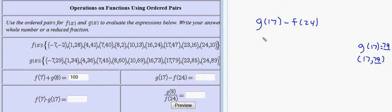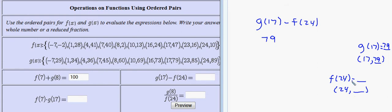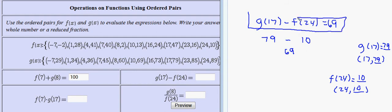I go up and replace g of 17 with 79. Now I'm supposed to subtract whatever I get when I do f of 24. As a point, f of 24 would be (24, ?). Looking at the set f, the point we need is 24 comma 10, which says that if you input 24, the output is 10. So f of 24 is 10. Subtracting, 79 minus 10 is 69. So g of 17 minus f of 24 equals 69. Go into MathAS and type that in.